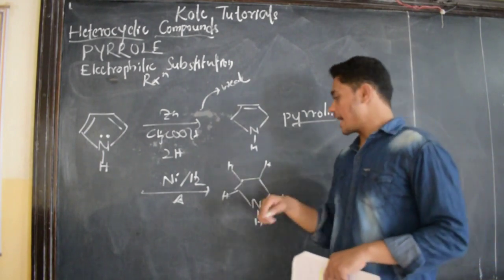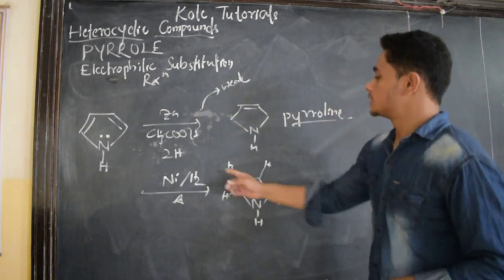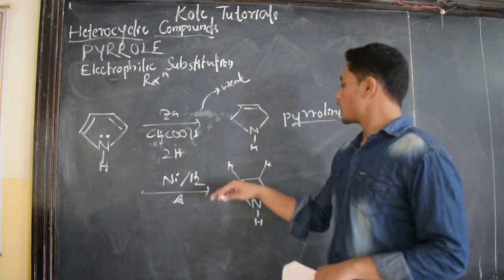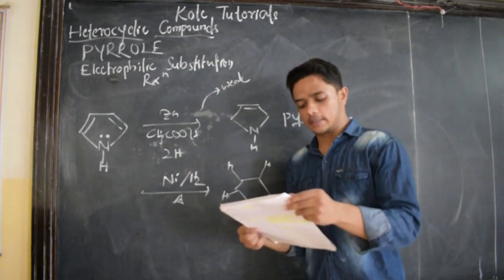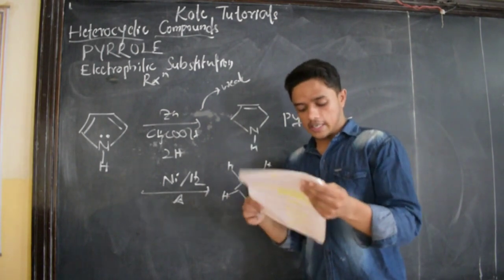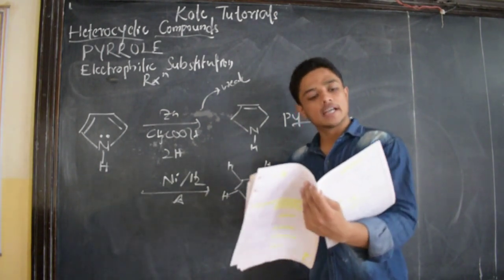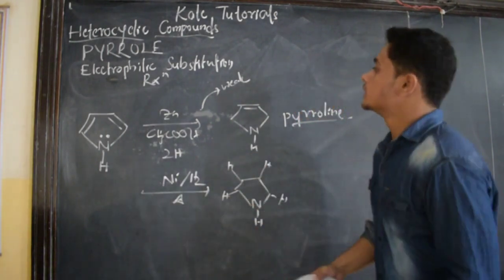Four hydrogens are added to the pyrrole. This is nothing but reduction. Addition of hydrogen is reduction, whereas addition of oxygen is oxidation. In next class, we shall discuss about acidic character of this pyrrole.